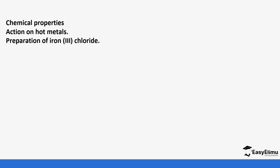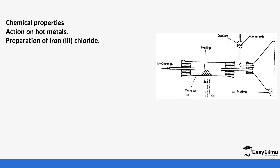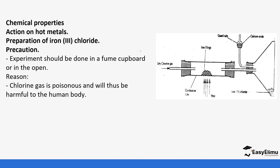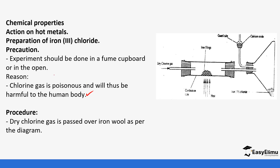Some of the chemical properties of chlorine: it reacts with metals to form metal chlorides. An example is iron chloride. This is done in a fume chamber because chlorine is very poisonous. In this setup, dry chlorine is passed through heated iron filings and a reaction occurs to form iron chloride, which is collected at the cooler parts of the tube. Calcium oxide is also put in a guard tube — we'll see the purpose of this later.